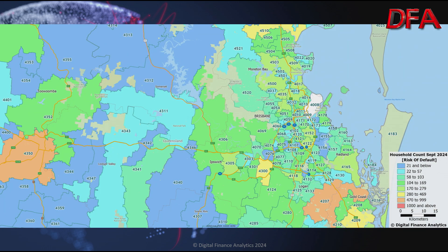Moving across to Brisbane, it's interesting that we're seeing the Toowoomba area (4350) but also areas around the Gold Coast (4207) showing up. Remember that population density tends to be lower in and around Brisbane relative to Victoria. This is an interesting observation, suggesting that in some areas default rates are going to rise quite significantly from where they currently are.